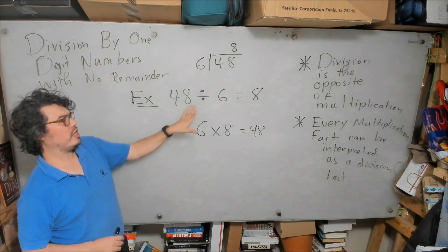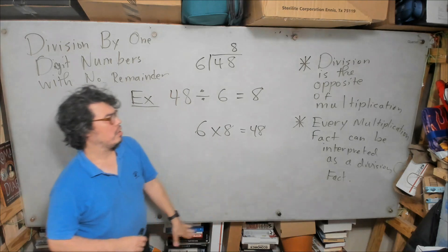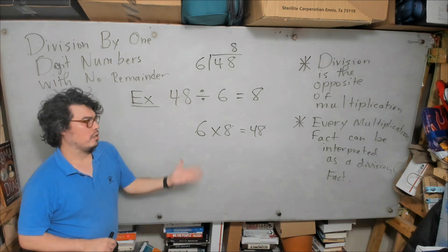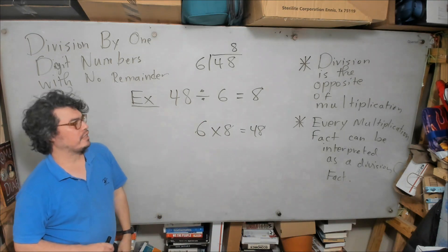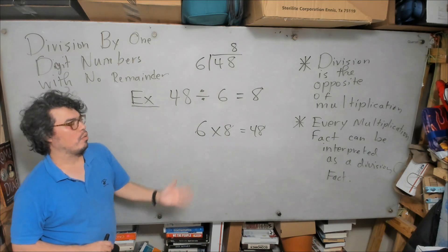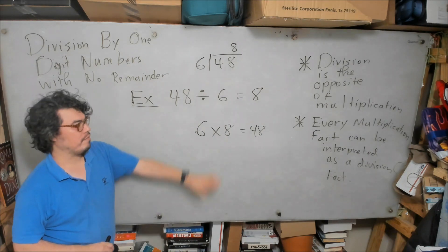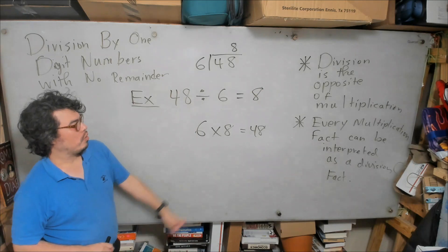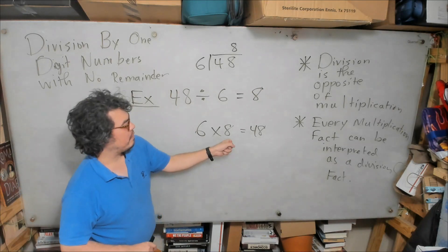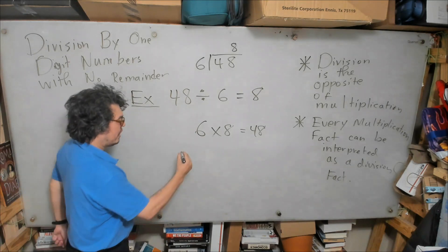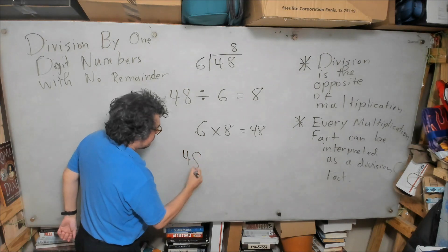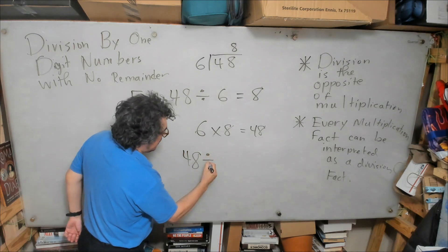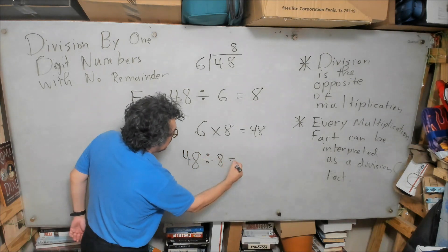We were asking what is 48 divided by 6, we got 8. We got that because of this multiplication fact. Since we already have this multiplication fact in front of us, we can ask what other division fact could we derive from this multiplication fact. Well, we could say that 48 divided by 8 is 6, so we would write that like this: 48 divided by 8 is equal to 6.